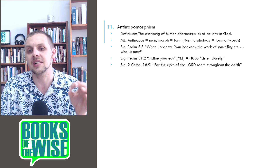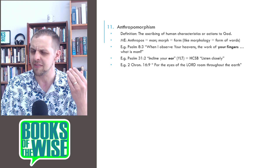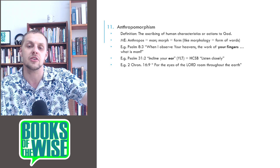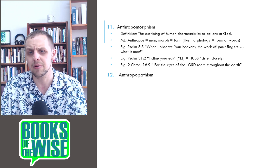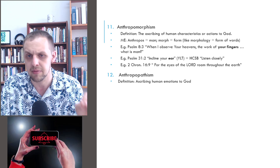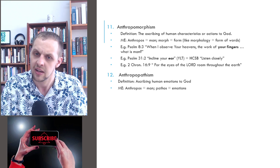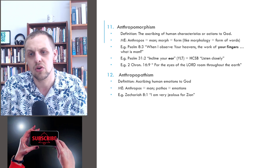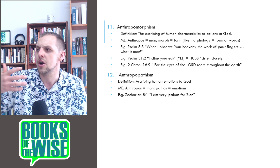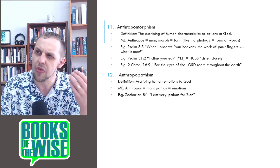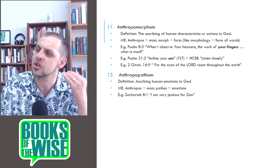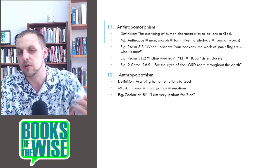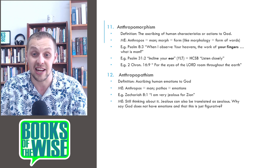2 Chronicles 16:9: for the eyes of the Lord roam throughout the earth — does God have eyes like we do? No, but He sees and understands us. It's ascribing a human characteristic to God so we can understand it figuratively. The next one is anthropopathism: ascribing human emotions to God. Anthropos means man, pathos means emotions. For example, Zechariah: I am very jealous for Zion. Whether God is really angry or whether it's an emotion we describe to God figuratively is still something to think about.